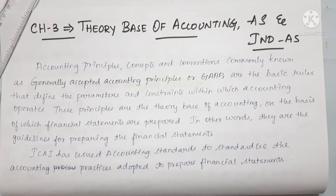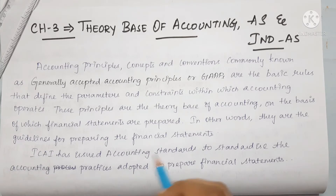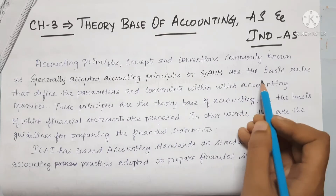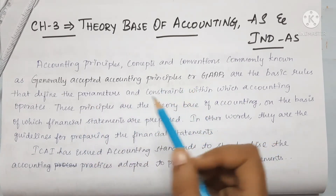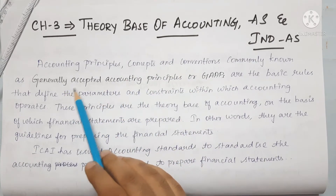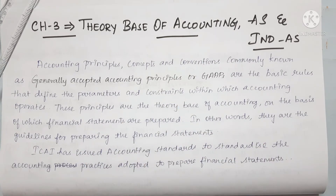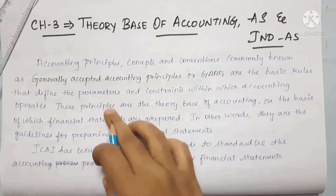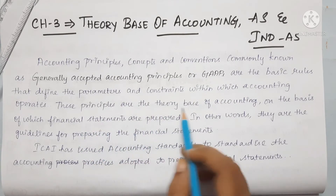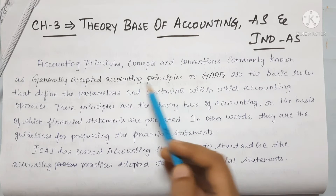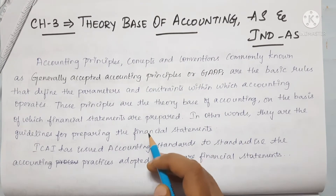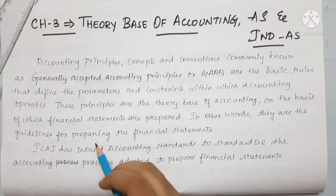Accounting principles are guidelines. Accounting principles, concepts and conventions define the parameters and constraints within which accounting operates. These are generally accepted accounting principles — the rules that we follow. These principles are the theory based on accounting, on the basis of which financial statements are prepared. In other words, they are the guidelines for preparing financial statements.